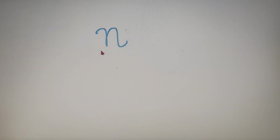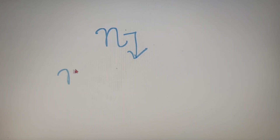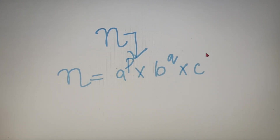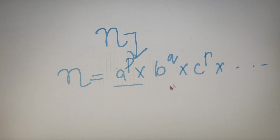Now suppose you are given a number n and you have to calculate the sum of factors of the number n. The first step would be prime factorizing the number n. So after prime factorization, the number would be a raised to the power p, into b raised to the power q, into c raised to the power r, and so on — where a, b and c are prime numbers and p, q and r are their respective powers. Now prime factorizing a number simply means representing a number as a product of prime numbers raised to their respective powers.